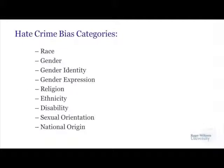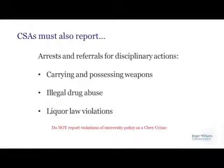Hate crime bias categories include race, gender, gender identity, gender expression, religion, ethnicity, disability, sexual orientation, and national origin — whether they are actual or perceived bias categories. CSAs must also report arrests and referrals for disciplinary actions including carrying or possessing weapons, illegal drug abuse, and liquor law violations. We do not report violations of university policy as a Clery crime.